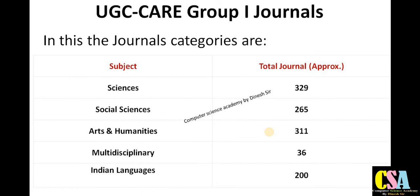Group 1 has subject categories including science, social science, arts and humanities, multi-disciplinary, and Indian languages. Science has approximately 329 journals, social science has approximately 265. The list is updated frequently — some journals get discontinued, some get added — so don't focus on fixed numbers. Just pick the journal most suitable for your research topic.